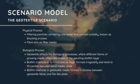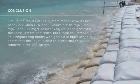As conclusion, simulation results of SSF system model shows its best behavior when C and N and P values are 85 mg/L, 5.59 mg/L and 1.25 mg/L respectively, while the geotextile thickness is 9 centimeters, achieving 100% total coli removal. This engineering model with geotextile layer scenario shows that this layer is able to accelerate total coli removal in the slow sand filter system, and this kind of technology should be applied for future use in treatment.